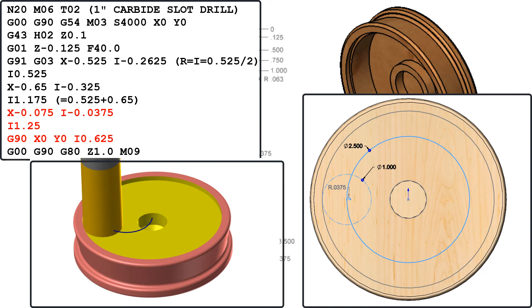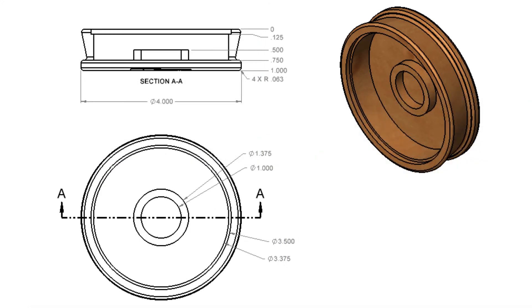Lastly I'll code G90, X0, Y0, I 0.625 to arc the cutter back to the center.